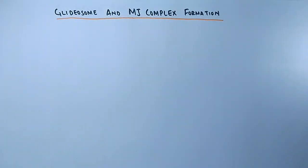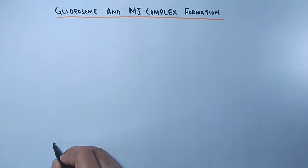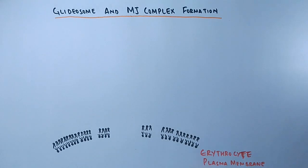And also there is a formation of a junction called the moving junction or simply MJ complex. Now let's see in detail how this glidosome and moving junction power the motility.